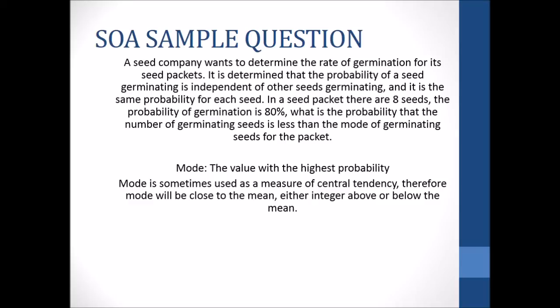Also mode is sometimes used as a measure of central tendency. Remember how they used to make us do mean, median, and mode? In general, mean, median, and mode are like the three measures of central tendency. So like I was saying though, mode is the one with the highest probability, and it is very close to the mean. So what that means is that whatever our mean is, our mode is going to be maybe an integer above or below it. So earlier we established that the mean is 6.4. So that means that our mode is either going to be a 7 or a 6.